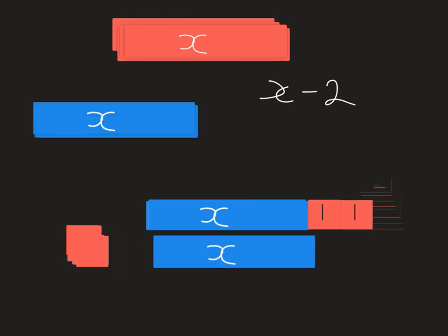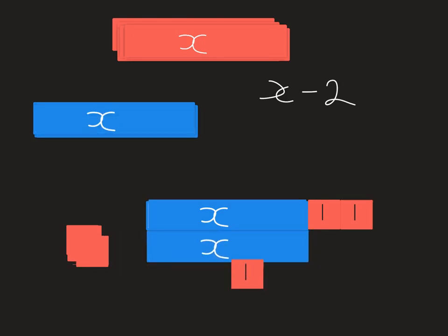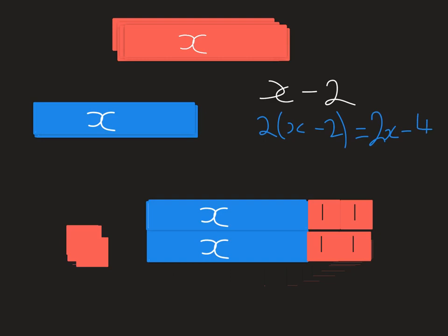If I wanted another x take away 2, I'd have another x and another take away 2. So 2 lots of x take away 2 is 2x, and I've got take away 4, subtract 4.